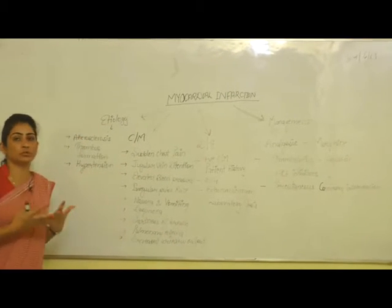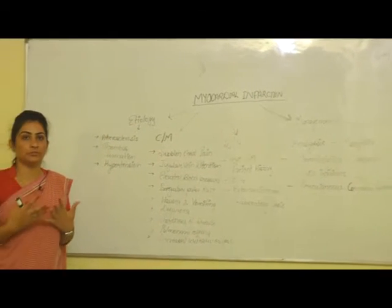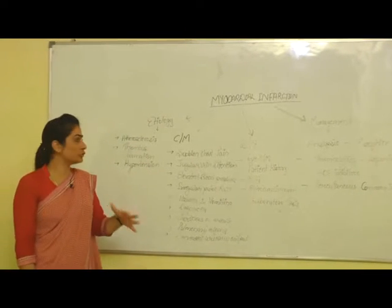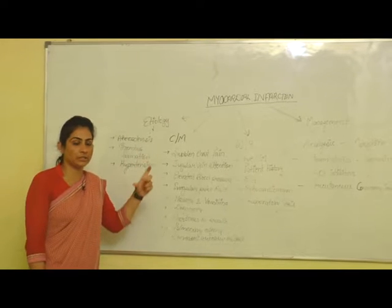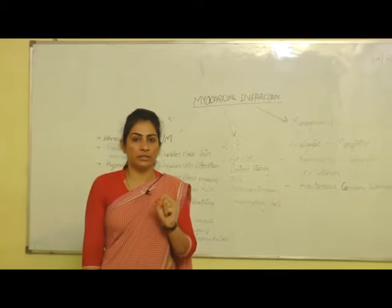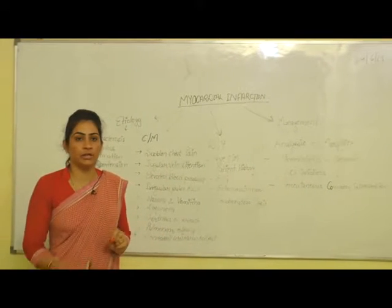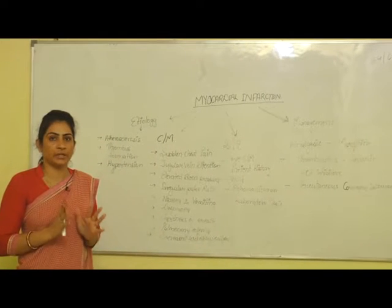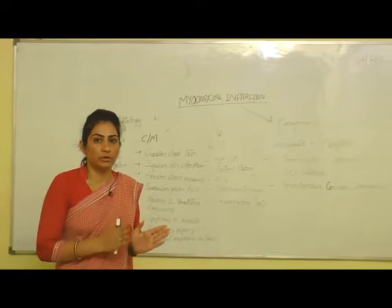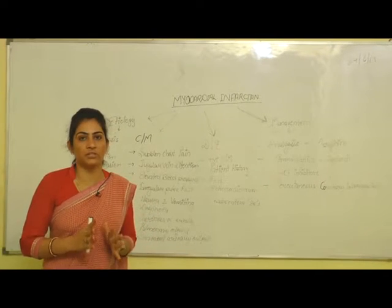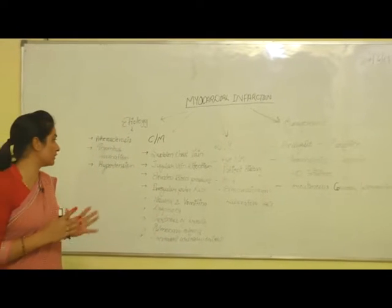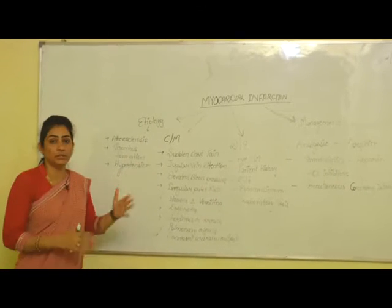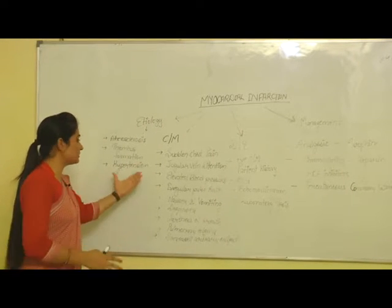There are many etiological factors which cause myocardial infarction. First of all, atherosclerosis — in this, a thrombotic plaque is formed in the coronary artery which occludes the coronary artery completely, and the blood supply to the myocardial muscle is stopped, causing death of myocardial cells. The second one is thrombus formation in the different arteries, and the last one is hypertension.